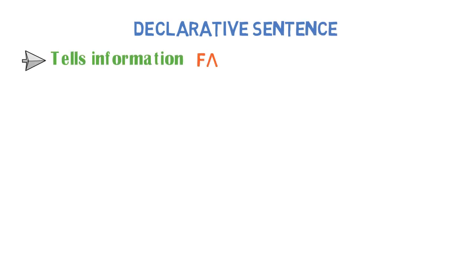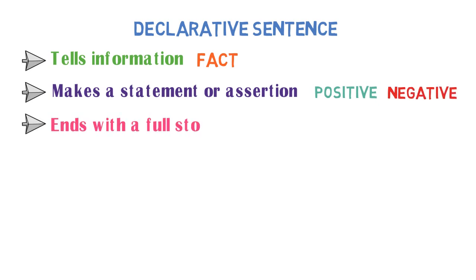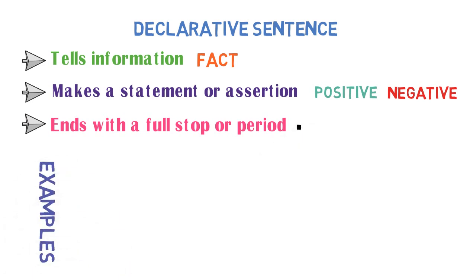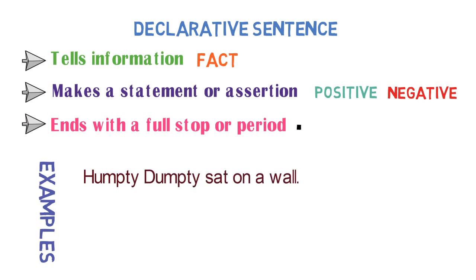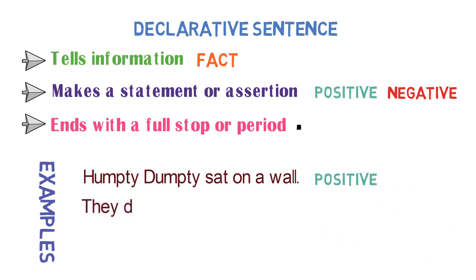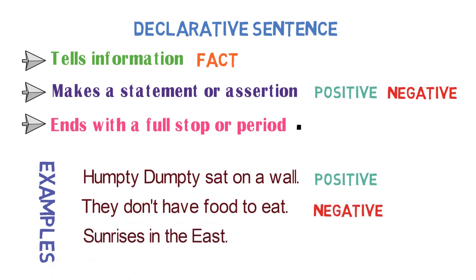Type 1: Declarative sentence. A declarative sentence is used to tell information or a fact, or simply make a statement or assertion. The statement could be positive or negative. It ends with a full stop or period. Examples include: 'Humpty Dumpty sat on a wall' — information in positive form. 'They don't have food to eat' — information in negative form. 'Sun rises in the east' — a fact.